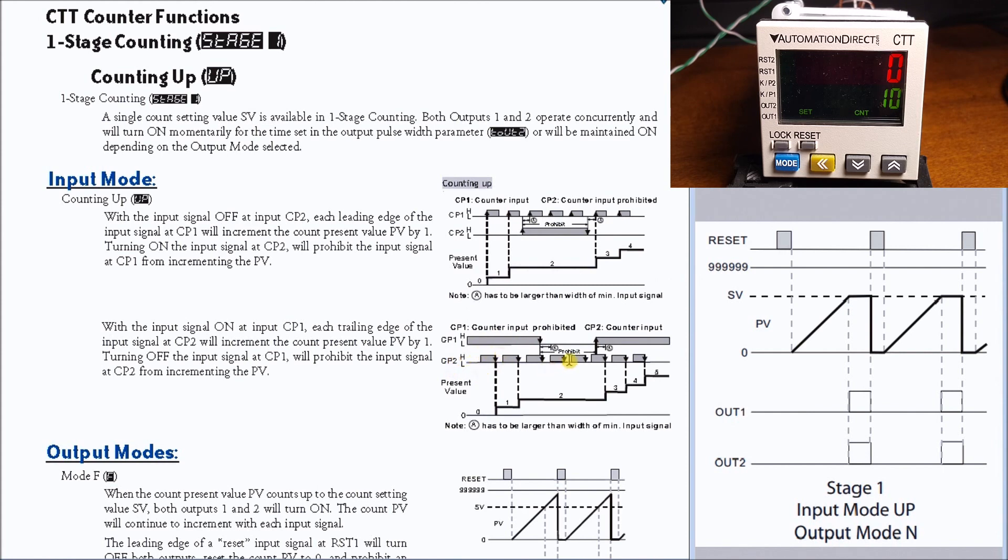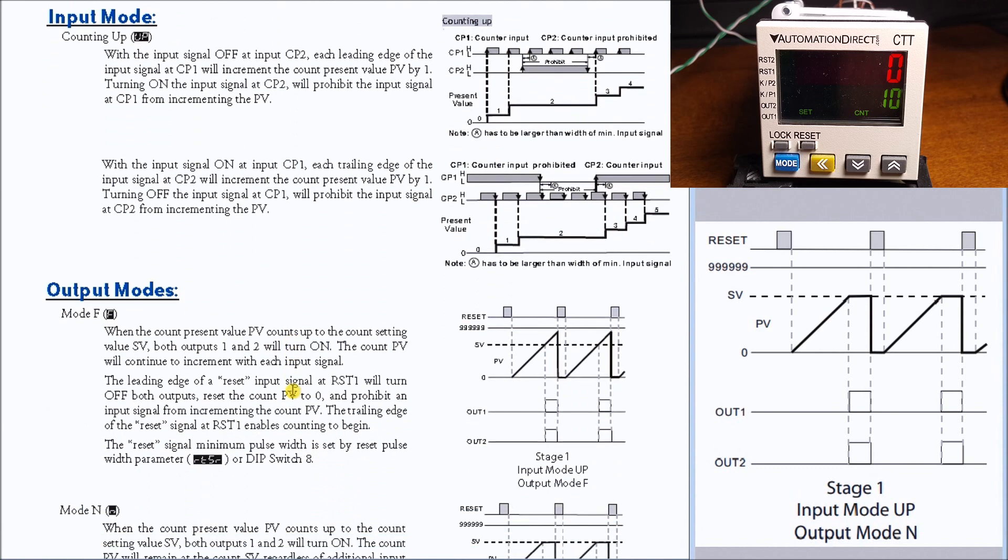That's our up counting. We also have down counting that we can set, which we won't cover here in this example. Basically, stage 1 counting is a single output setting. What happens is both outputs operate at the same time and will turn on momentarily when the set value equals the present value, or be maintained depending on the output mode that you've selected. We have several different output modes that we can choose from.